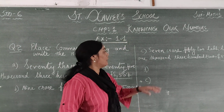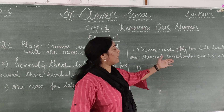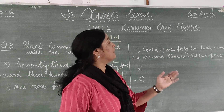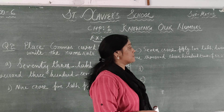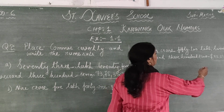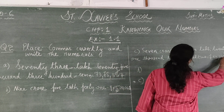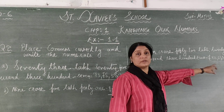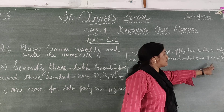Part C: 7 crore, 52 lakh, 21,302. So 7 crore, 52 lakh, 21,302. You insert commas: after the hundreds place, then after 21, then after 52, then after 7. So the comma comes after 7 (crore position), after 52 (lakh position), and after 21 (thousands position).